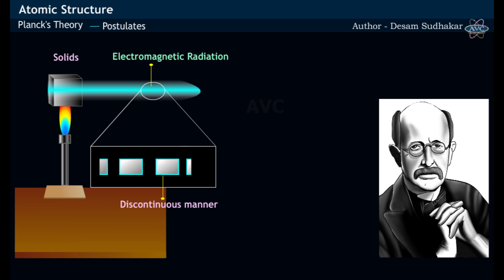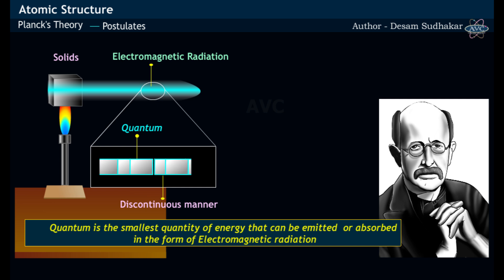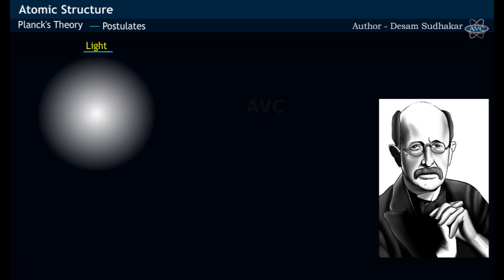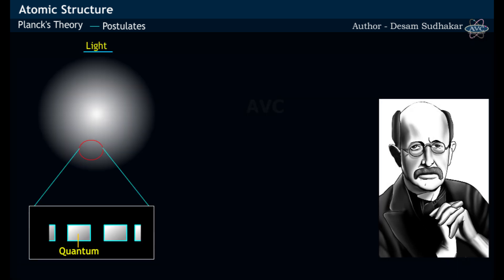Planck called these packet quantities quantum, the smallest quantity of energy that can be emitted or absorbed in the form of electromagnetic radiation. In the case of light, the quantum is called a photon.